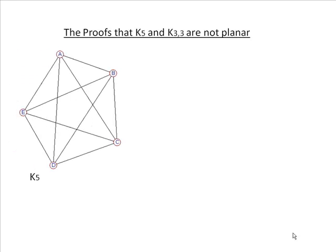This graph is K5. It's the complete graph with five nodes. In fact, every node is connected to every other node with a single connection.